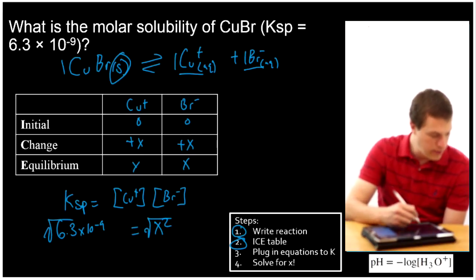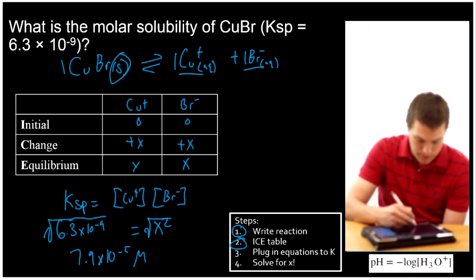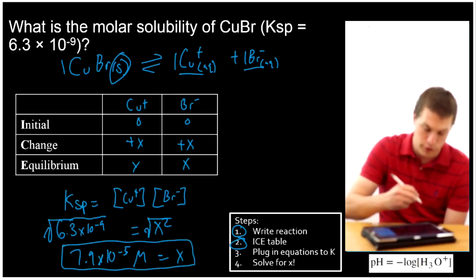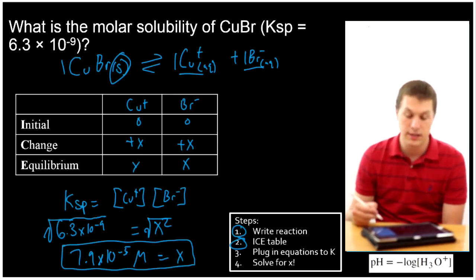How do I solve for X? This one's easy. I just take the square root of both sides, and when I do that, I'll get 7.9 times 10 to the minus 5 molar is equal to X, and that is my molar solubility. So for copper bromide, 7.9 times 10 to the minus 5 of it could dissolve.